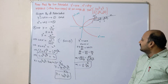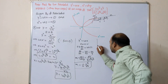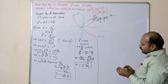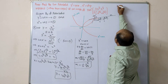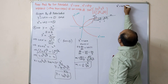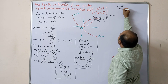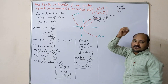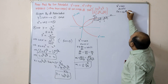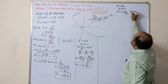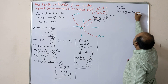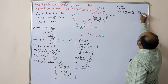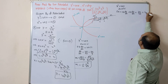Similarly, for the second curve x² = 4by, differentiating with respect to x: 2x = 4b·(dy/dx), so dy/dx = x/(2b). This is the slope m2 of the second curve.